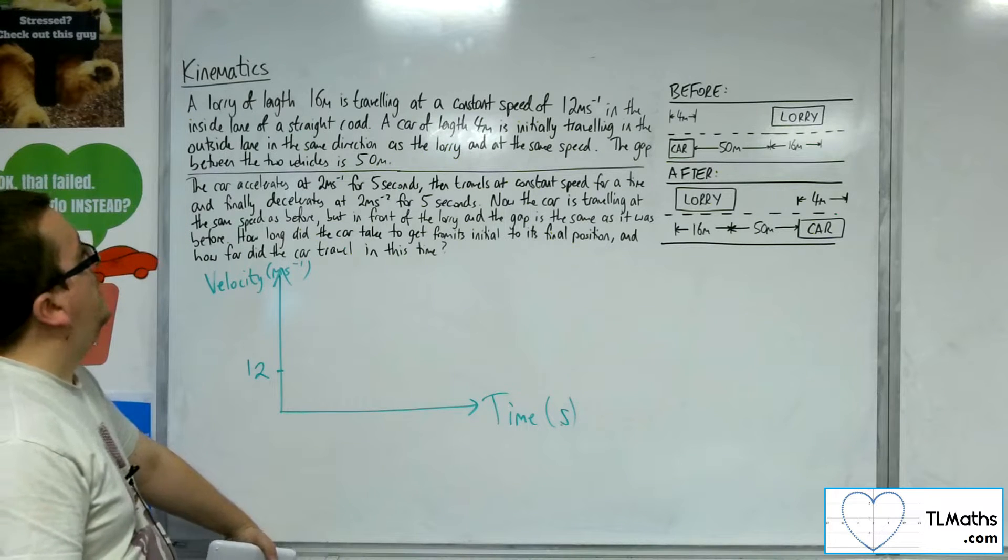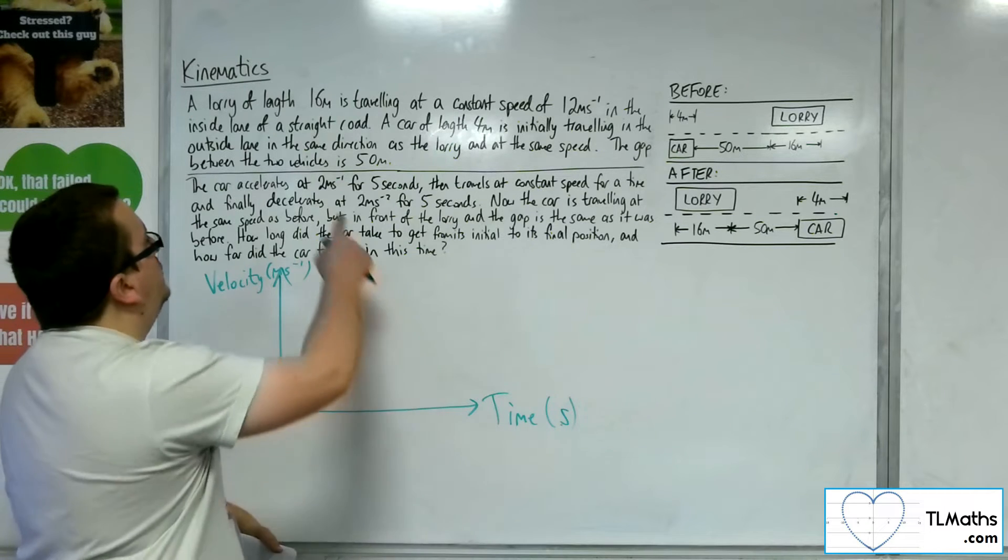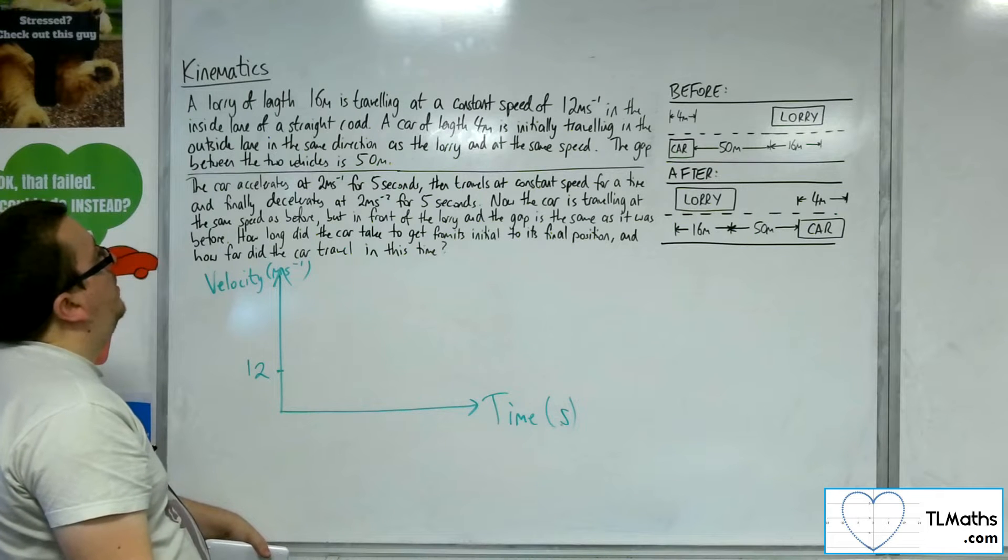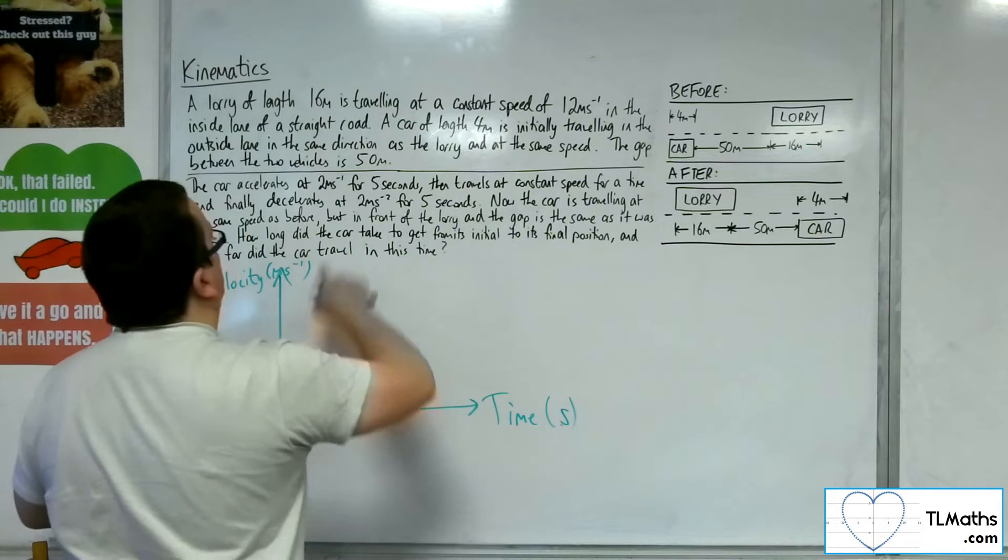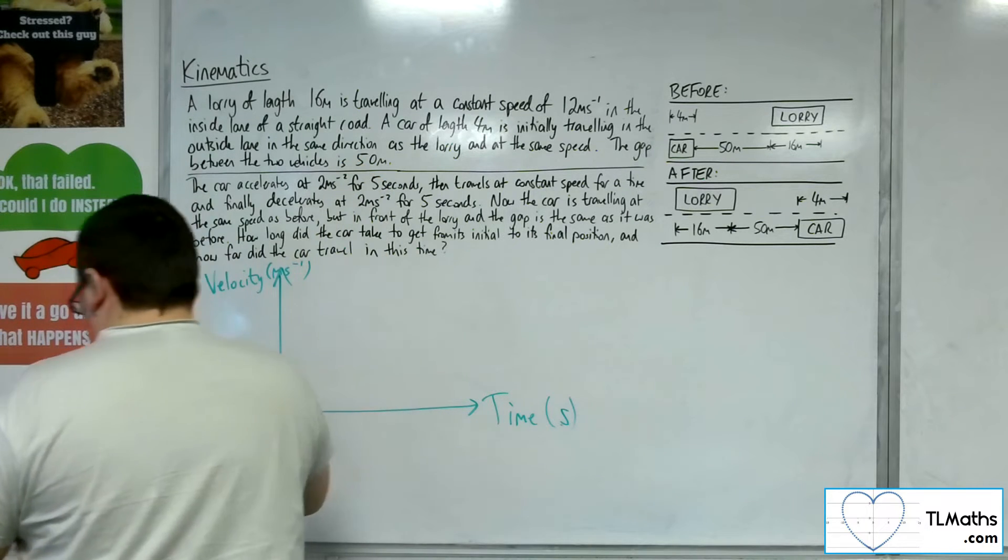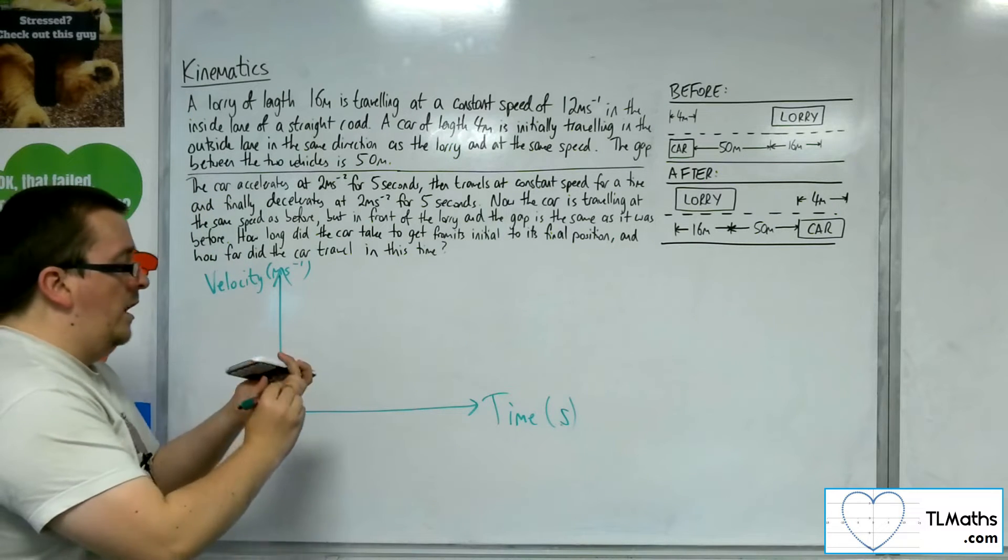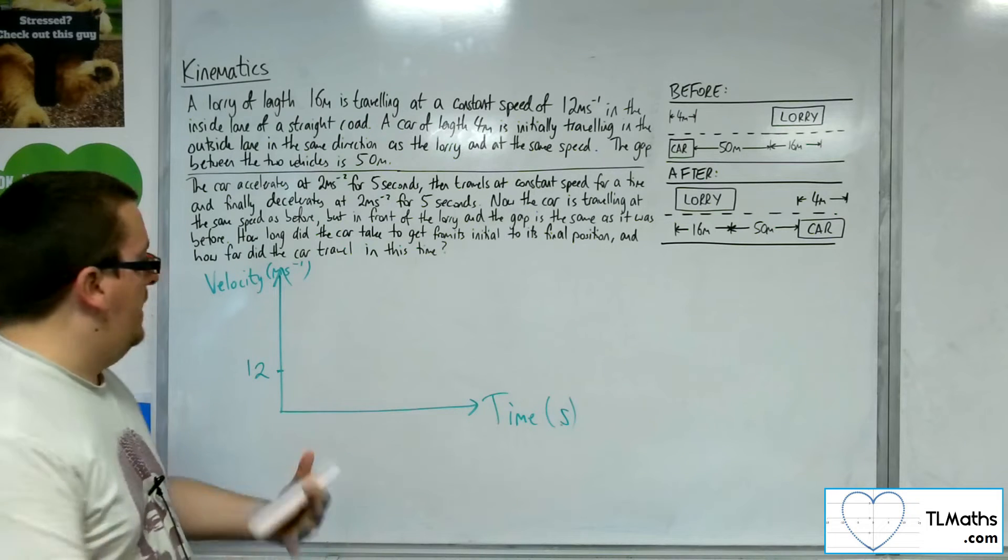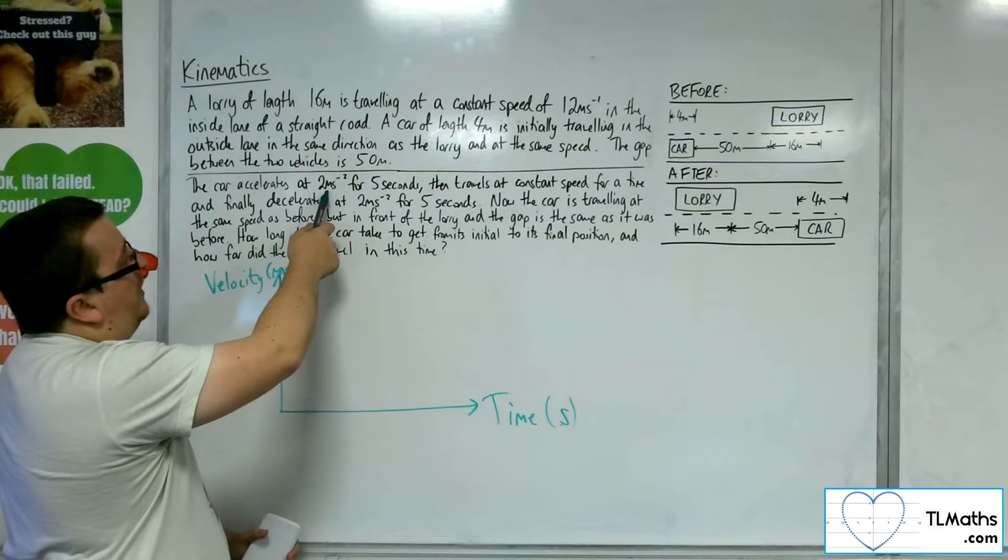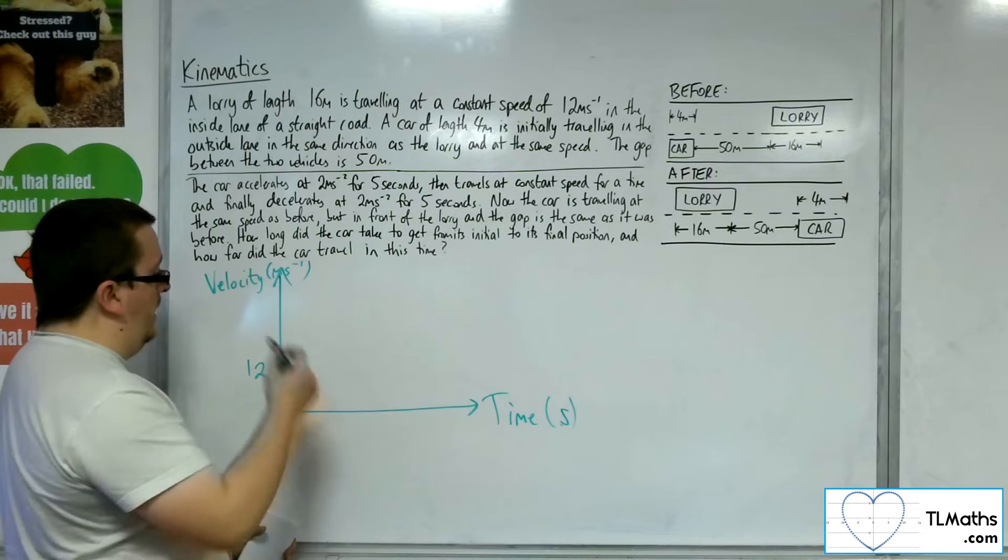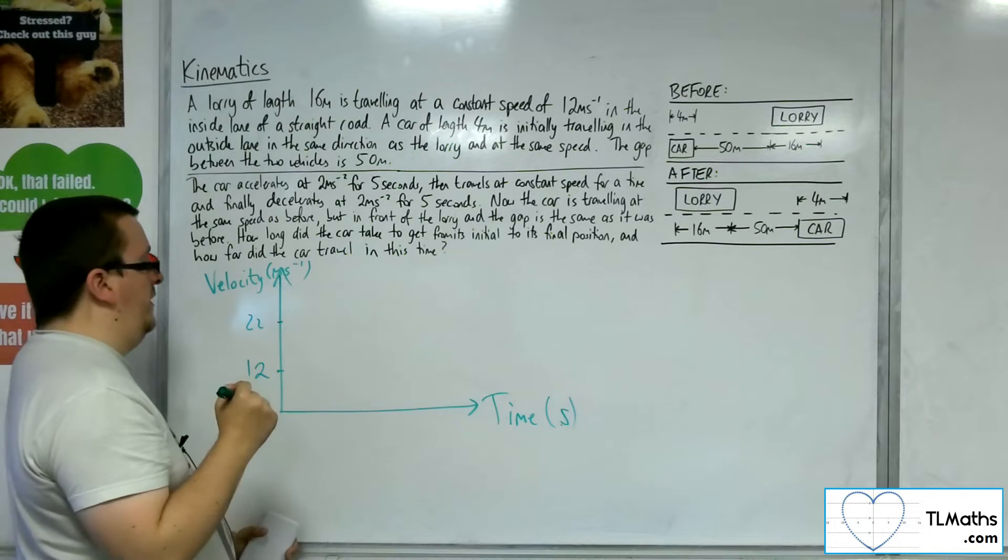The car accelerates for 5 seconds, accelerating at 2 metres per second per second. After 5 seconds, what is its velocity? If it's accelerating at 2 metres per second per second for 5 seconds, then after 5 seconds, it'll be at 22 metres per second.